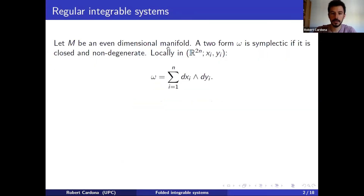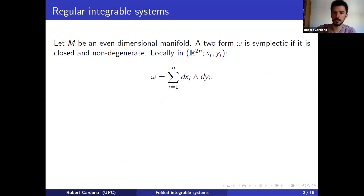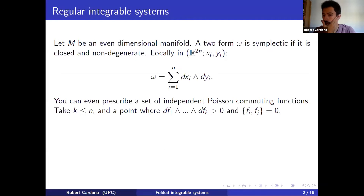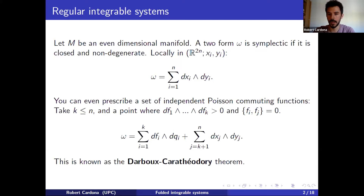Let me first recall that a two-form is symplectic when it's closed and non-degenerate. Locally, it always looks the same — this is Darboux's theorem. Something which is a bit better than Darboux's theorem is that you can prescribe a set of up to n functions which Poisson-commute and are independent at some point, and then fix them into some Darboux-like coordinates. This is known as the Darboux-Carathéodory theorem.